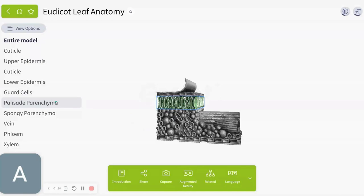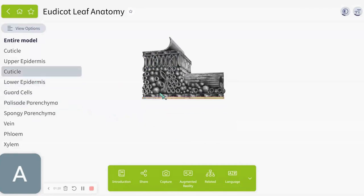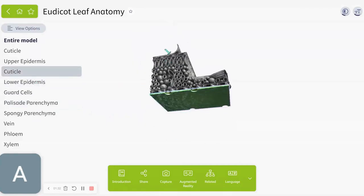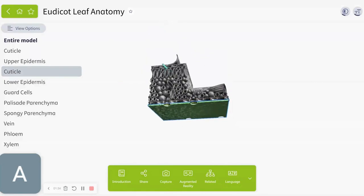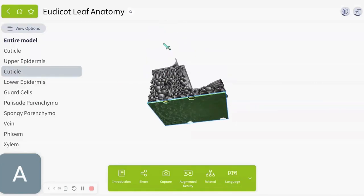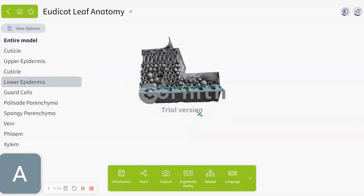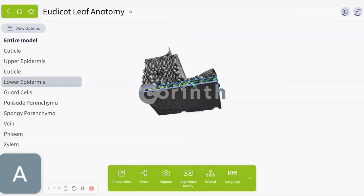And there's a second name for this, the palisade mesophyll. There's another cuticle on the bottom, but this side is a bit different. And here's the lower epidermis, the lower part of the epidermis.